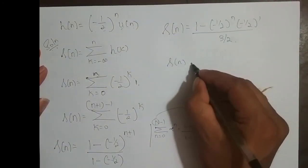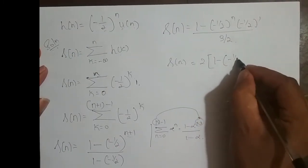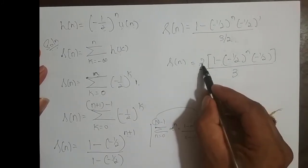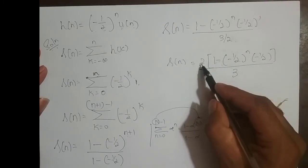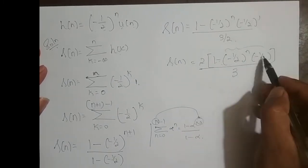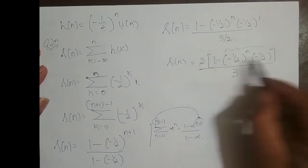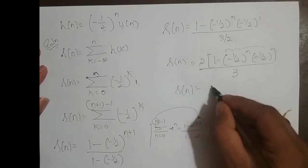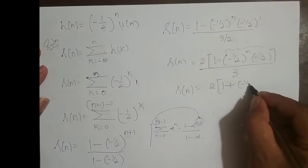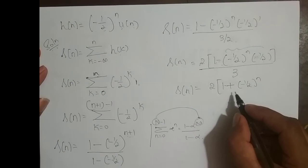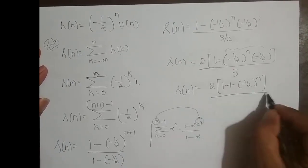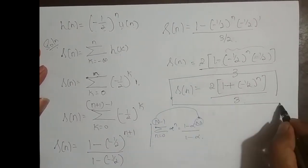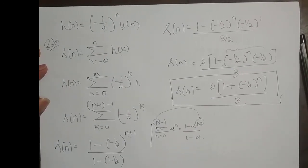Simplifying S of n: 1 minus minus 1 by 2 power n plus 1 divided by 3 by 2. I split the exponent: 1 minus minus 1 by 2 power n times minus 1 by 2, divided by 3 by 2. Taking 2 to the numerator and distributing, 2 times 1 is 2, and 2 times minus 1 by 2 is minus 1. So S of n equals 2 times 1 plus minus 1 by 2 power n, divided by 3. More examples will be taken up in the next video.